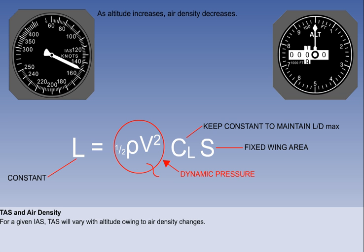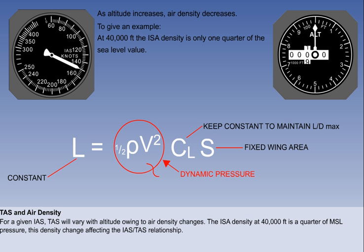There is a direct relationship between density and the TAS that an aircraft will achieve for a given IAS, usually in connection with a change in altitude, since density decreases as altitude increases. Considering the ICAO standard atmosphere or ISA, in which the density at 40,000 feet is a quarter of that at mean sea level, we can see the changes in relationship that occur between TAS and IAS because of density change.